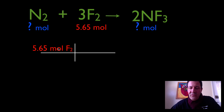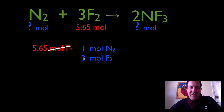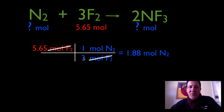We want to get out of moles of F2, so we have to put moles of F2 in the denominator — that will allow us to cancel. We want our answer to be in moles of N2, so we're going to put moles of N2 on the top. We're going to use our molar ratio: this is three to one, so we put three on the bottom and one on the top. We cancel, and we're left with moles of N2. To react 5.65 moles of F2, we are going to need 1.88 moles of N2. We're not going to convert to grams because we're not asked to do that in this problem.